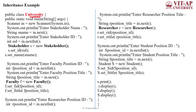The driver class is named University, which contains the main method — wherever the main method is available, that class is called the driver class. Inside, we create an object and use the Scanner class to get input: a String for stakeholder name and an int for stakeholder id.